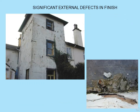Significant external defects in the finish — look at the picture on the left closely and you can see the render is badly cracked. The picture on the right shows looking out over the porch, which faced the south-west prevailing winds. Rain just poured down through the flashing at the back, and there was essentially no roof left — basically all the timber in that roof was full of dry rot.